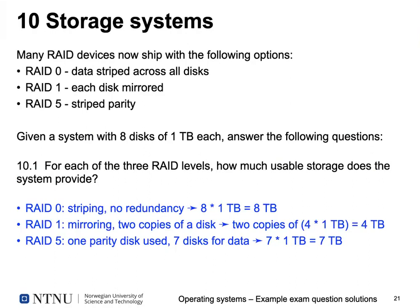Finally, we talked about storage systems — specifically RAID devices. RAID 0 means no redundancy: data is simply striped across all disks. RAID 1 means mirroring: each disk has an exact copy. RAID 5 uses striped parity. We had a system with eight disks of one terabyte each. For RAID 0 you have all eight terabytes available. For RAID 1 you need two disks to store one terabyte of usable data, giving four terabytes. For RAID 5 you use one disk for parity, leaving seven terabytes usable.